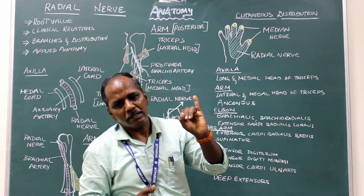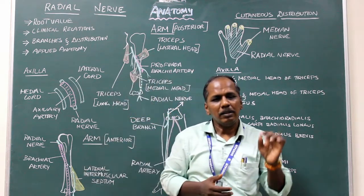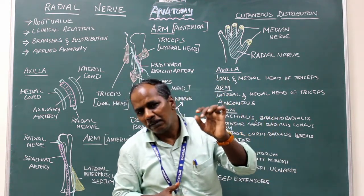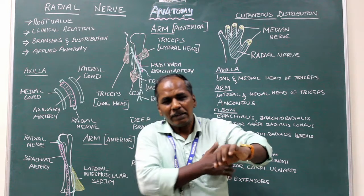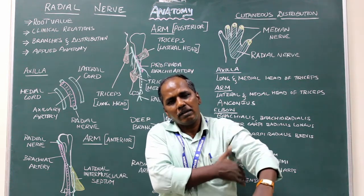Number one: Crutch paralysis. In this condition, the radial nerve is affected in the axilla due to the pressure of the crutch.